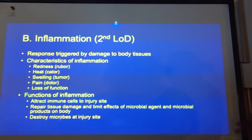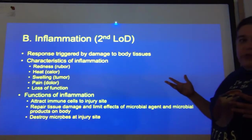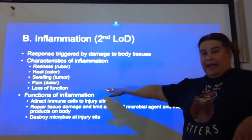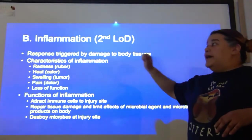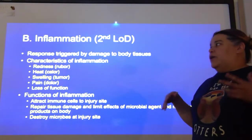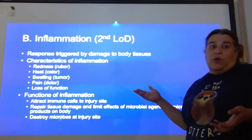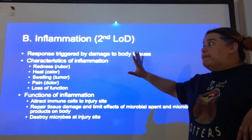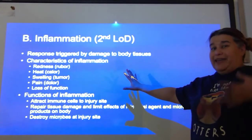Inflammation is a chemical response triggered by damage to body tissues. The characteristics we see with an inflammatory response include redness, heat, swelling, pain, and depending on how bad it is, maybe even loss of function. Redness we call ruber, heat we call calor, swelling we call tumor, pain we call dolor. These are all characteristics of an inflammatory response in or on the body.